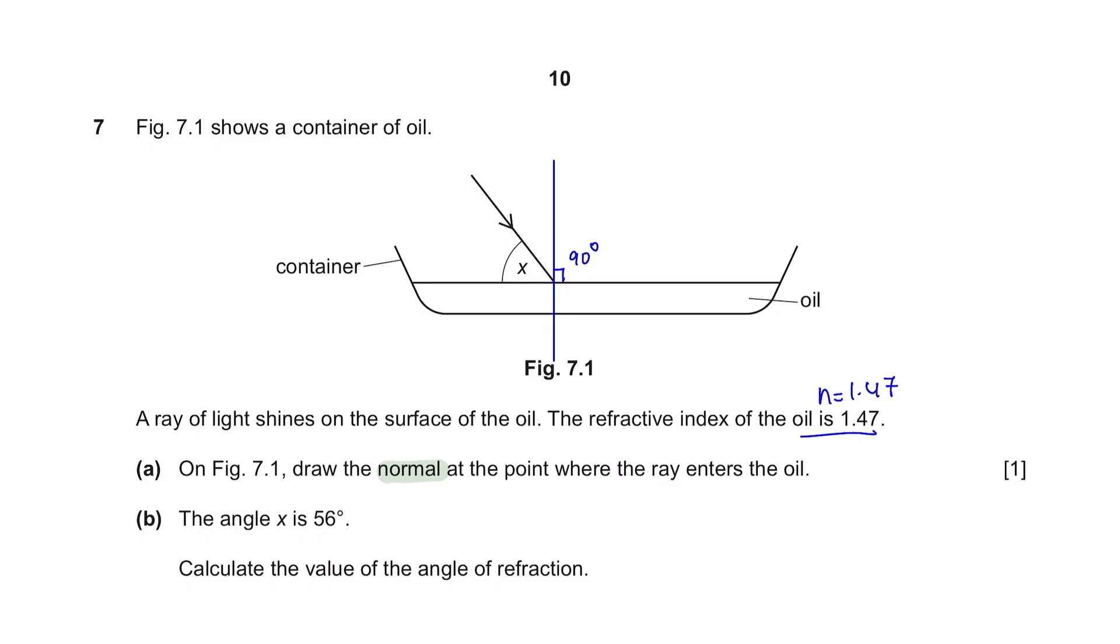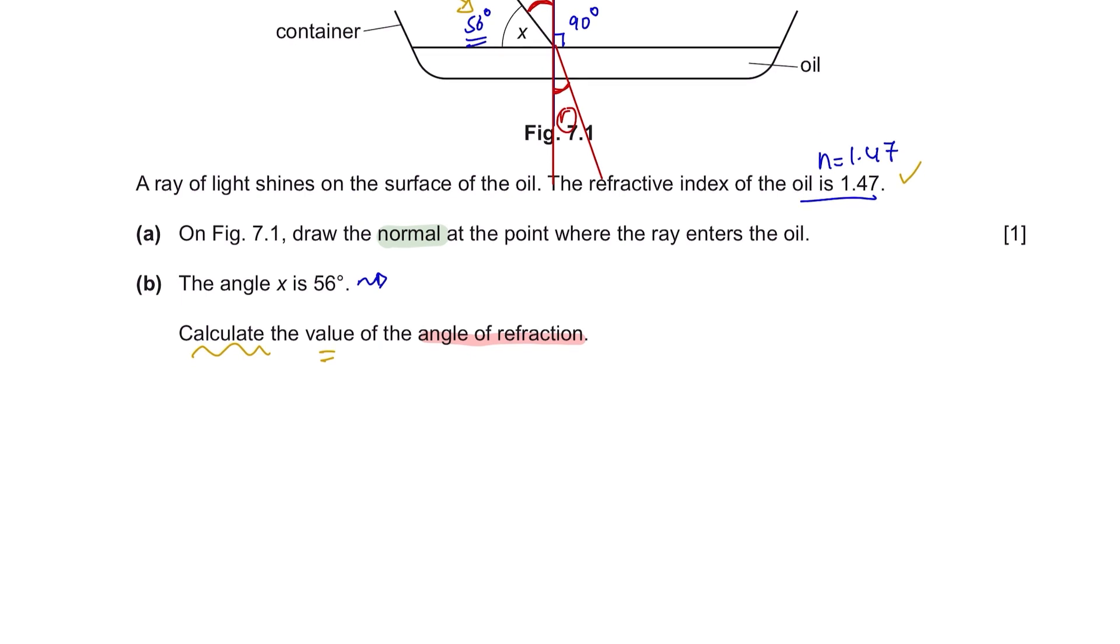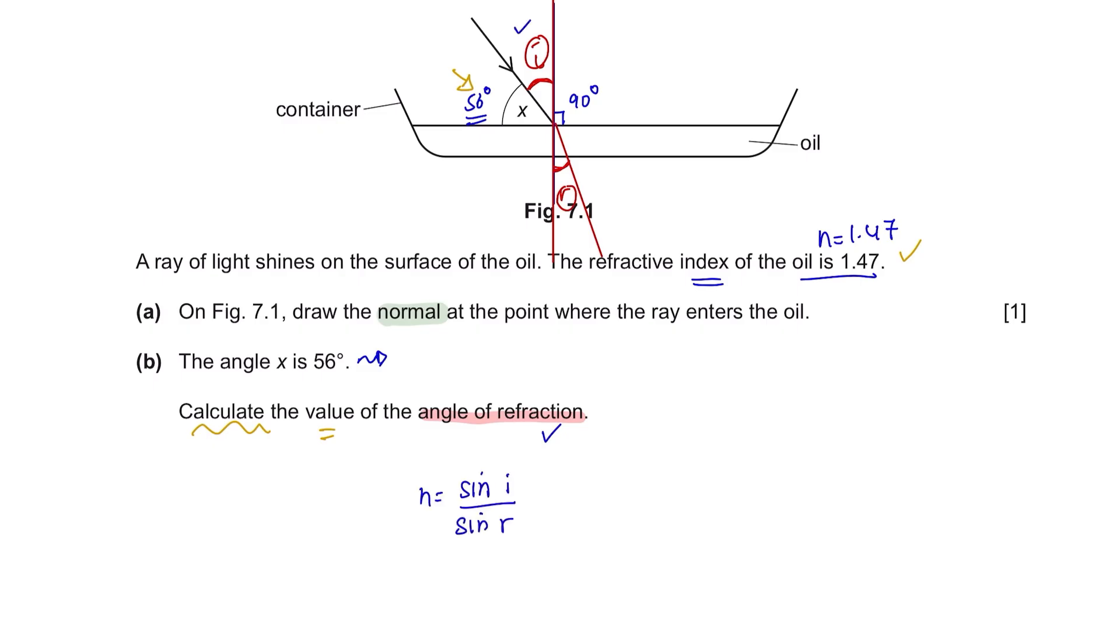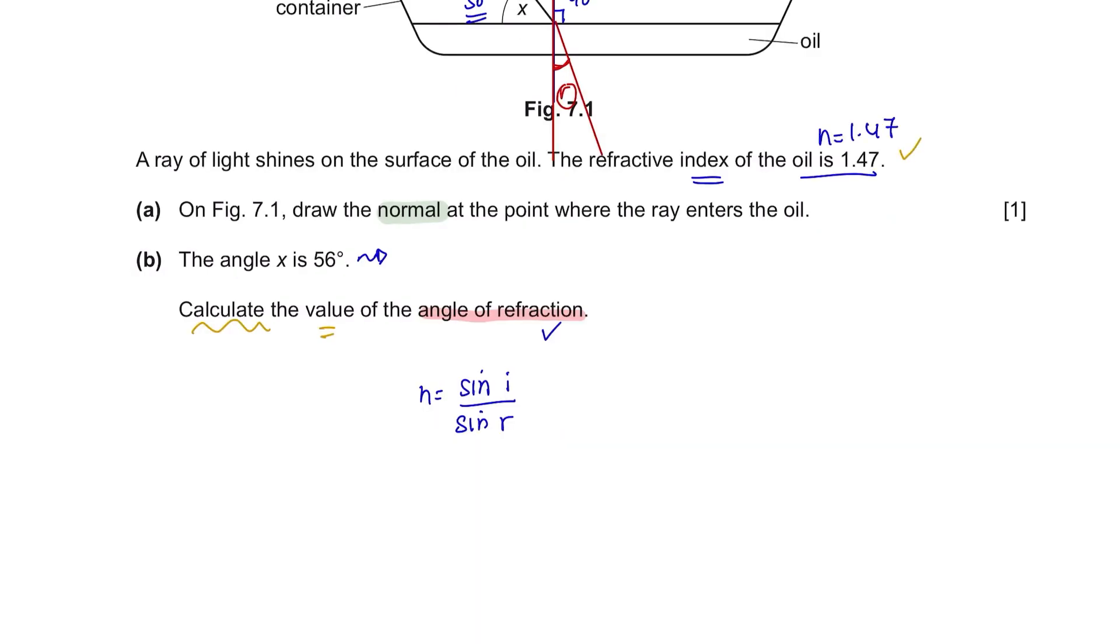Question B. The angle X is 56 degrees. The question wants you to calculate the angle of refraction. When you are required to calculate a value, you should know the formula relevant to the information given in the question. As such, refractive index is given, and the angle over here is given. But pay attention, this question is a little bit tricky. Even though the angle given here is 56 degrees, this is not the angle of incidence. Because angle of incidence is supposed to be here, and when your light refracts, your angle of refraction will be here. Remember, angle of incidence and angle of refraction is adjacent to its normal.